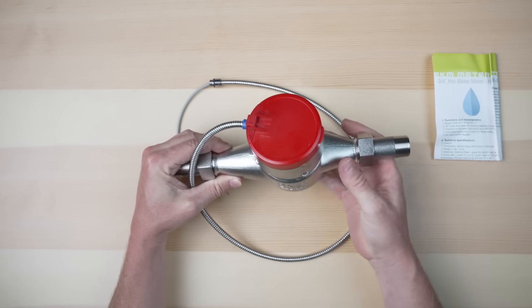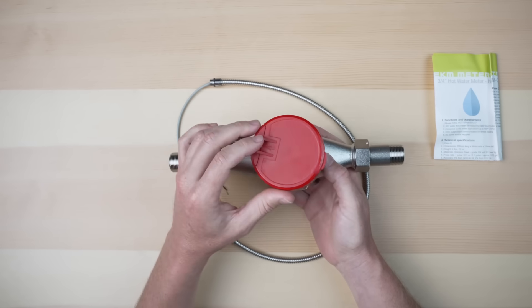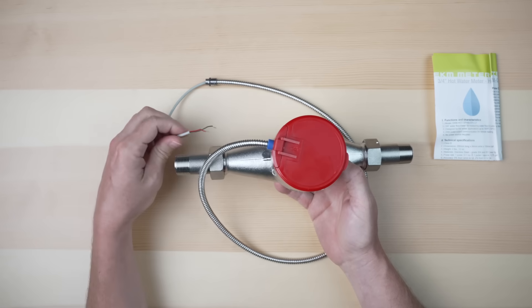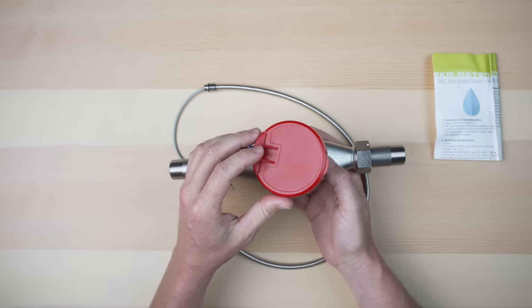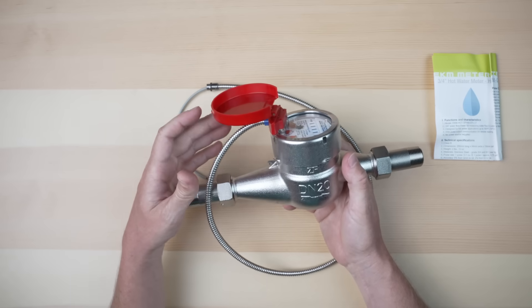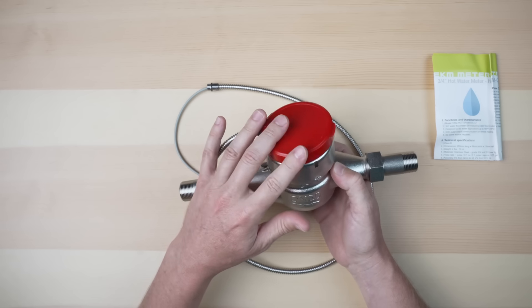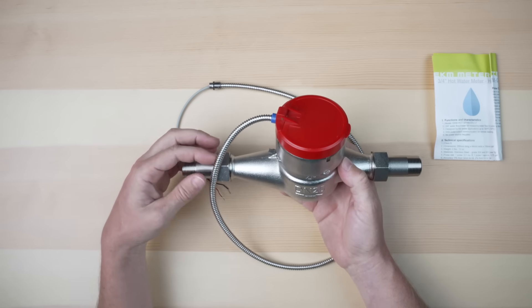So if you're looking for a three-quarter inch hot water meter that can be read locally on the dials or remotely, this is a great affordable option. It can be ordered today at our website at ekmetering.com. A link to the product as well as a link to the spec sheet is in the video description below.